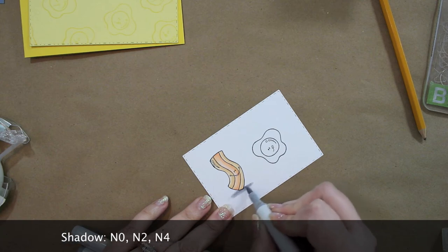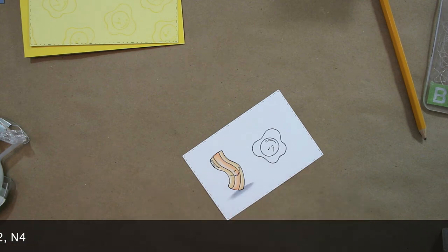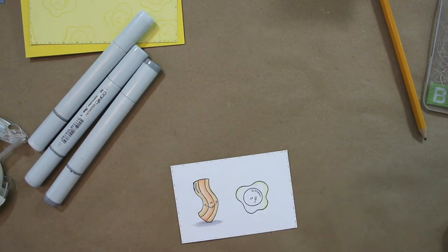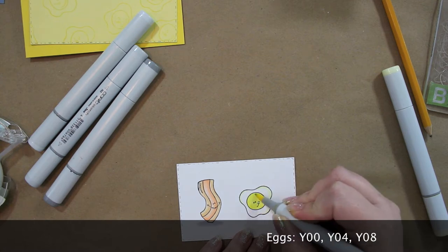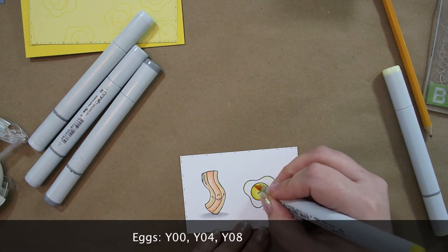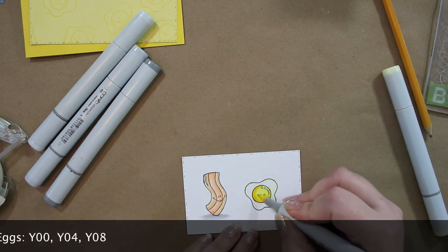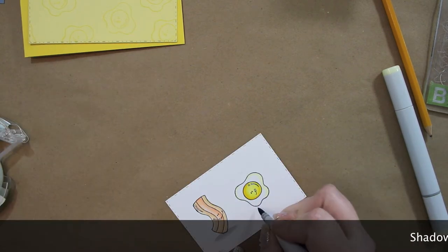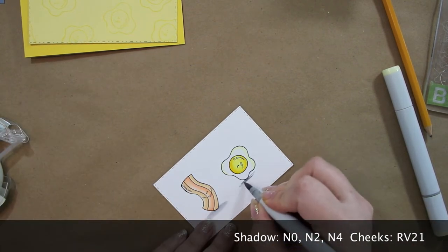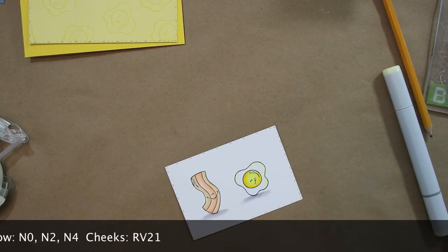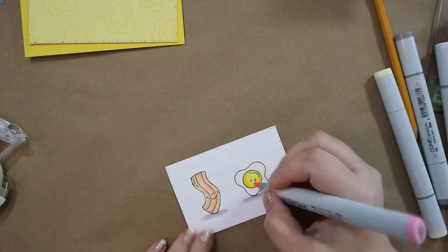I sped up this part of the video. There's tons of people out there that have videos on Copic coloring, so I just went ahead and colored without going into a lot of detail, but you can see how I layer the colors on. I also gave them shadows so they weren't just floating on the paper.